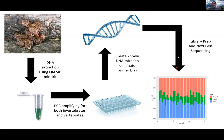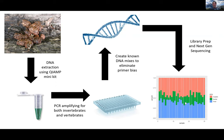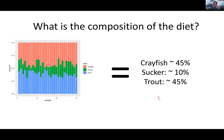We're still completing this sequencing step. As an example: if an otter is eating about 45% crayfish, 45% trout, and 10% suckers, you would get a result where each bar is an individual scat sample and the colors indicate the percentage of reads from different species. We then estimate the proportion of different prey in the diet by this means.